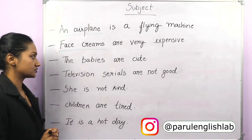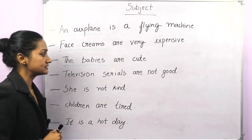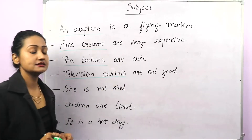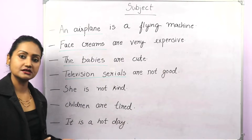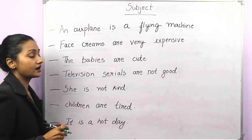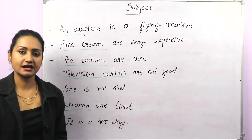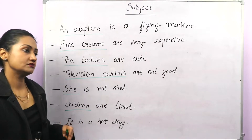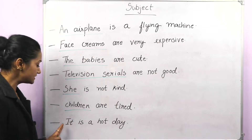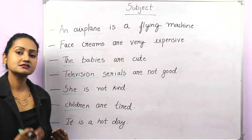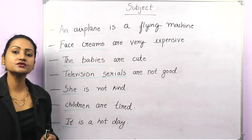'The babies are cute.' Who is cute? The babies. So the babies is the subject. 'Television serials are not good.' So television serials is the subject. 'She is not kind' — this is a negative sentence. Who is not kind? She. So she is the subject. 'Children are tired.' Children is the subject. Now, 'It is a hot day' — this can be a little confusing. You might think day is the subject, but no. Here 'it' is referring to the day, so 'it' is the subject.